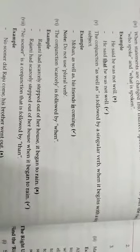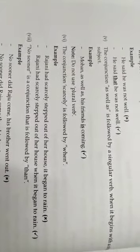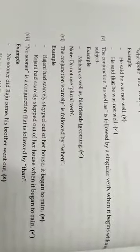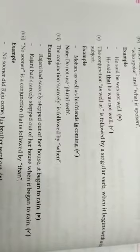The conjunction as well as is followed by a singular verb when it begins with a singular subject. For example, Mohan as well as his friend is coming. Here don't use the plural verbs, say is coming.